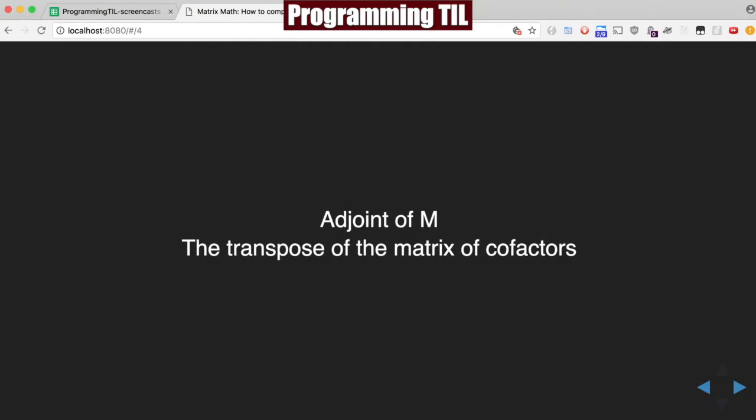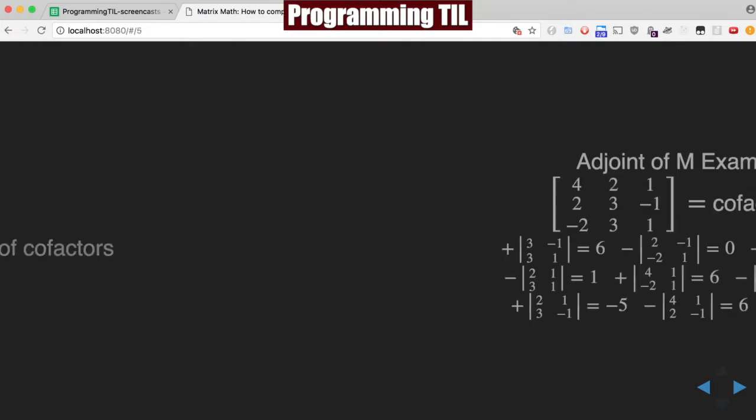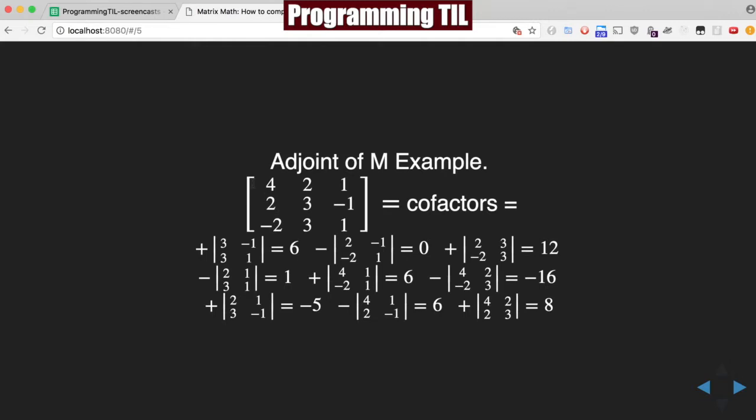To compute, first we need to figure out what the adjoint of M is. And the adjoint of M is the transpose of the matrix of its cofactors. So as you recall from the previous episode, there's a matrix up here. We're going to determine the cofactors, which is what we looked at previously with the plus, minus, plus, minus, plus, minus.